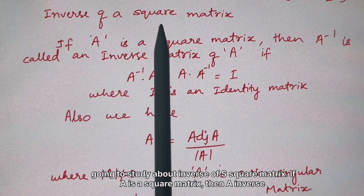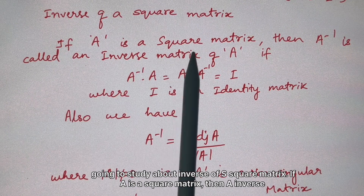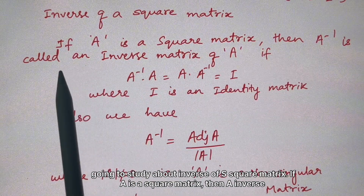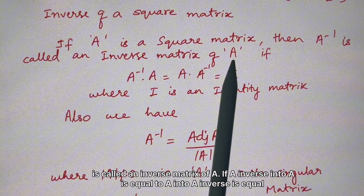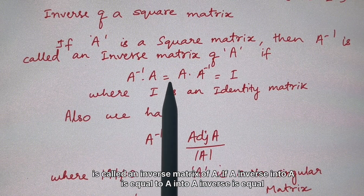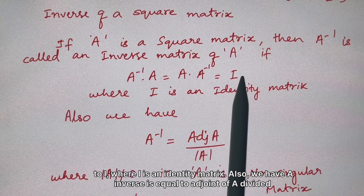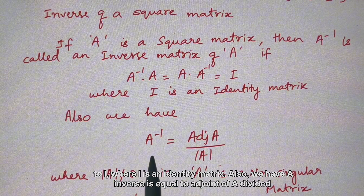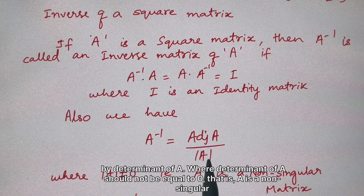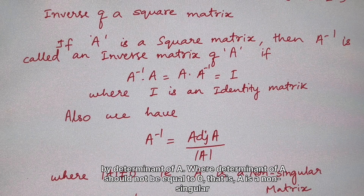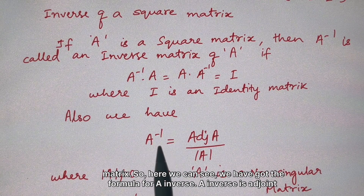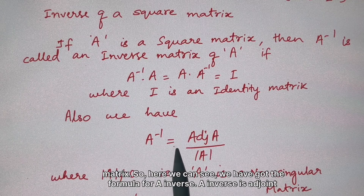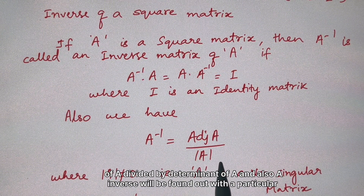Now we study the inverse of a square matrix. If A is a square matrix, then A⁻¹ is called the inverse matrix of A if A⁻¹·A = A·A⁻¹ = I, where I is the identity matrix. The formula is: A⁻¹ = adj(A) / det(A), where det(A) must not be equal to 0.